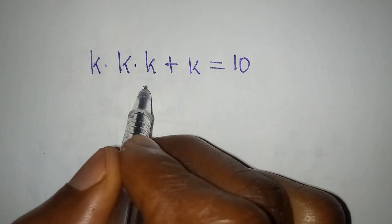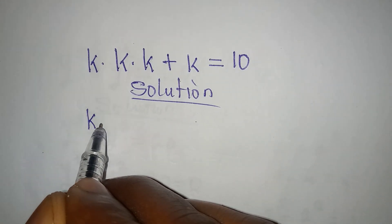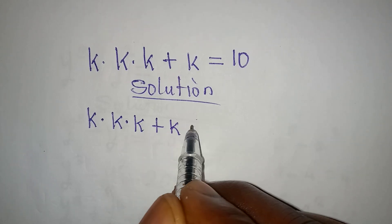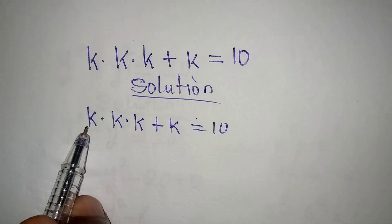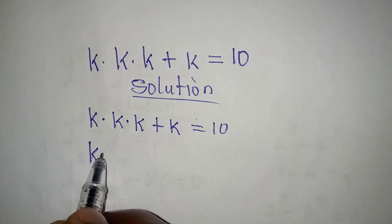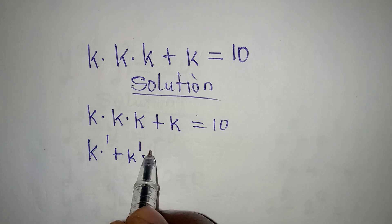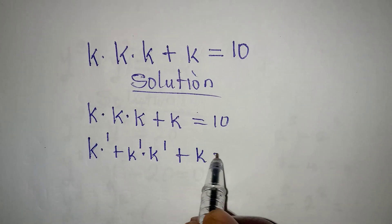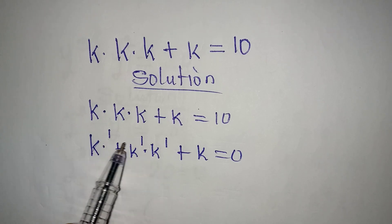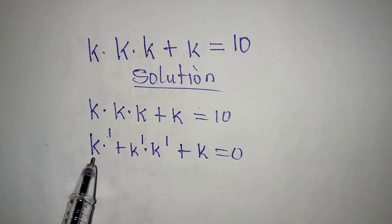Let's provide the solution to k multiplied by k multiplied by k plus k equal to 10. Now k times k times k is the same thing as k to the power of 1, plus k to the power of 1, times k to the power of 1, then plus k equal to 0. According to the rule, we do not normally write the power of 1, but there is an invisible one always there. So according to the law of indices...